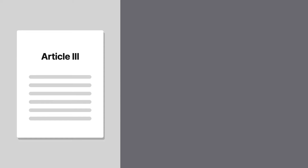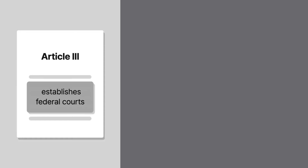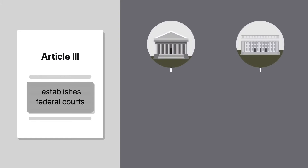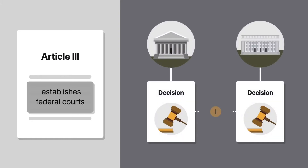We all know that Article III establishes federal courts, including the Supreme Court. But what if a federal court decision conflicts with a decision of another federal tribunal?